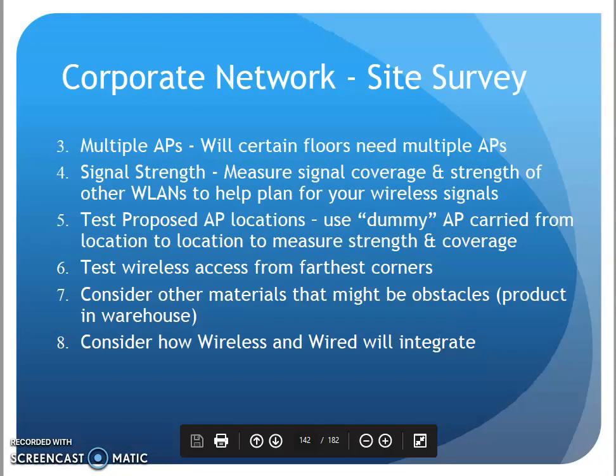I need to think about whether I need multiple access points to cover a floor, or multiple floors, or whether I can put one on the ceiling of the first floor and have it cover both the first and second floor. Signal strength is also a consideration — many access points allow me to adjust signal strength, which increases or decreases my coverage area. If I put an access point in the center of the building and increase the signal power, I might cover the whole building with just that one. But if I move it to the side, I might spill my signal out to the street or neighboring buildings where I don't want it to be.